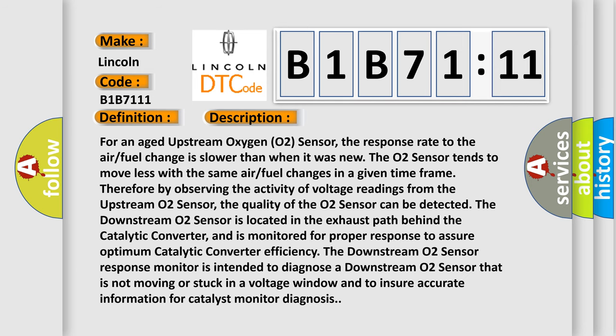For an aged upstream oxygen O2 sensor, the response rate to the air fuel change is slower than when it was new. The O2 sensor tends to move less with the same air fuel changes in a given time frame. Therefore, by observing the activity of voltage readings from the upstream O2 sensor, the quality of the O2 sensor can be detected.